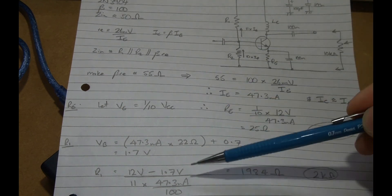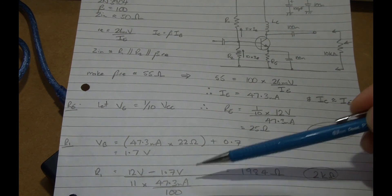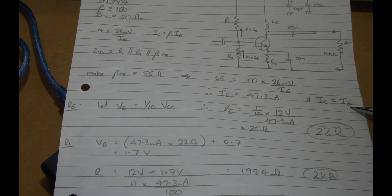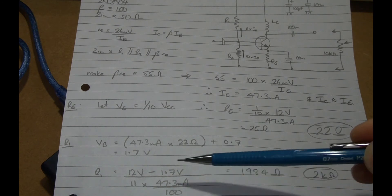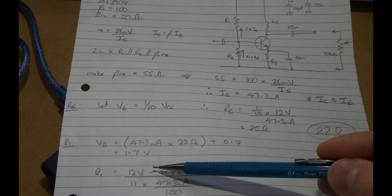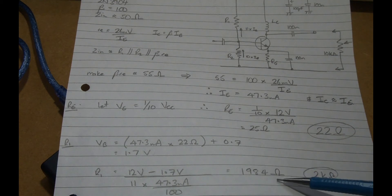So we can do now 47 milliamps assuming that IC is approximately equal to IE divided by beta gives you IB times 11. And we can do that division there and we'll come out at 1984 ohms. So we'll just use roughly 2k.